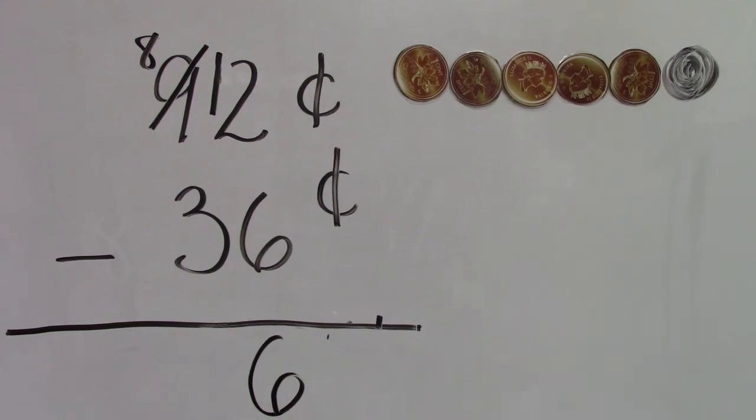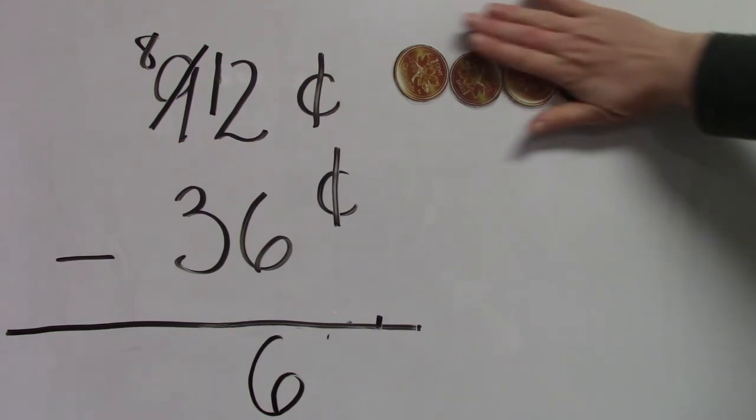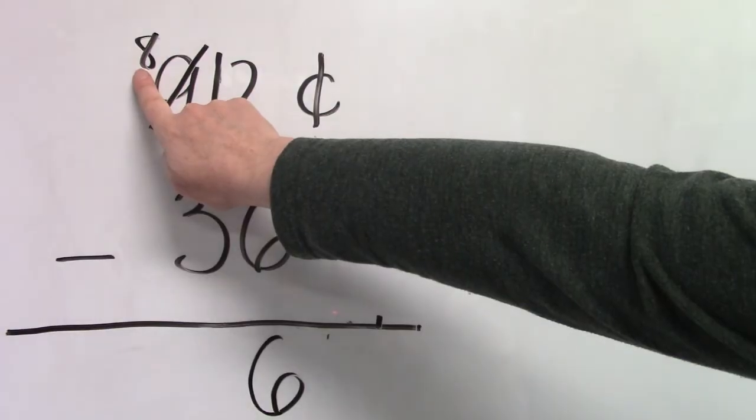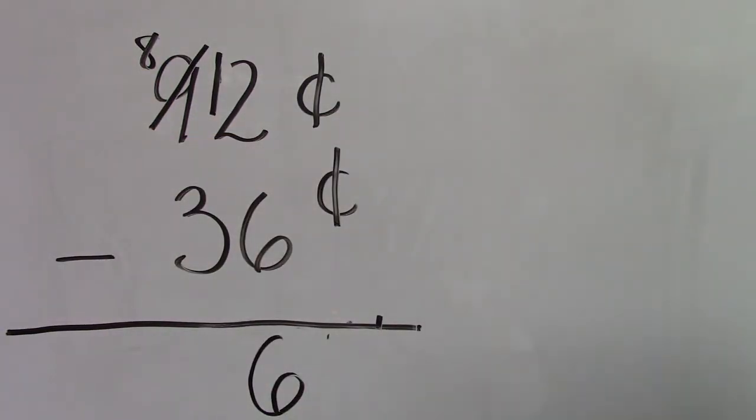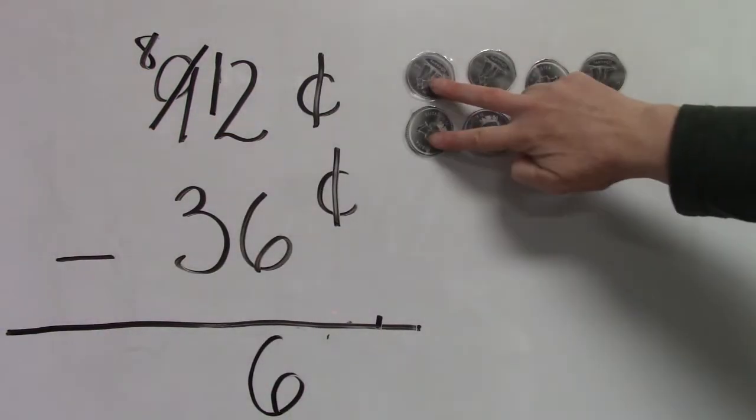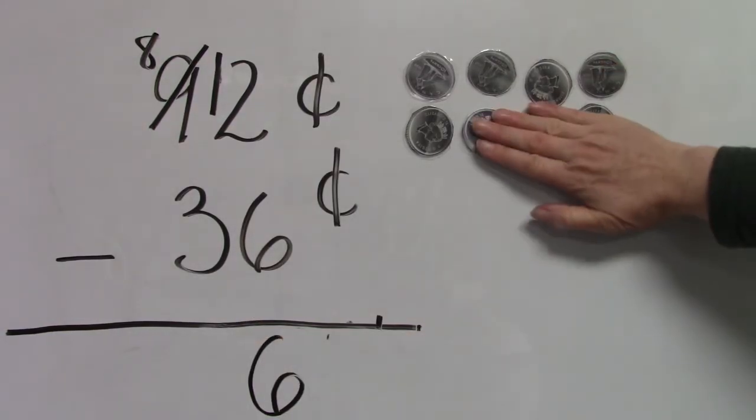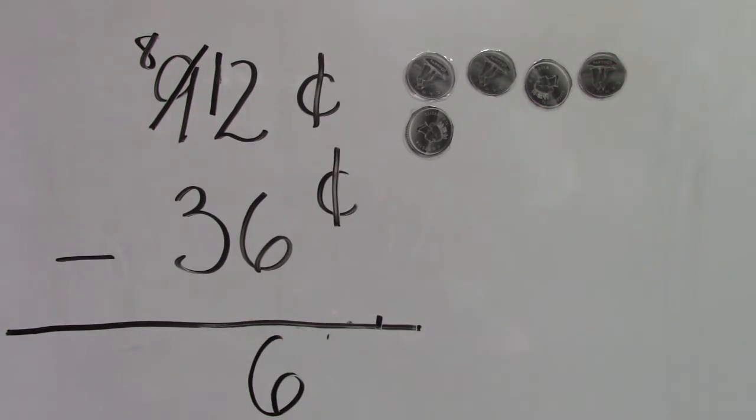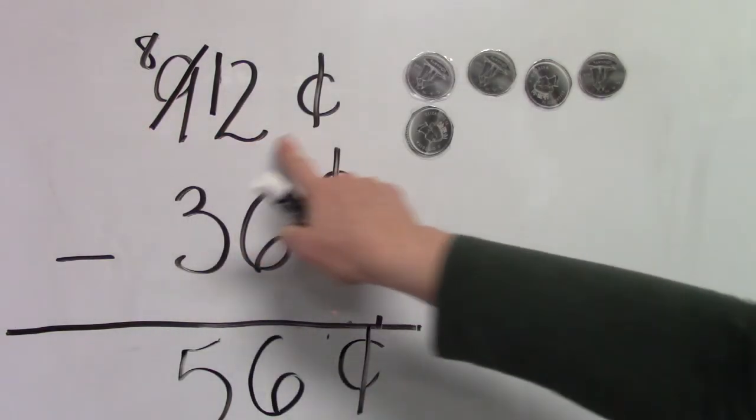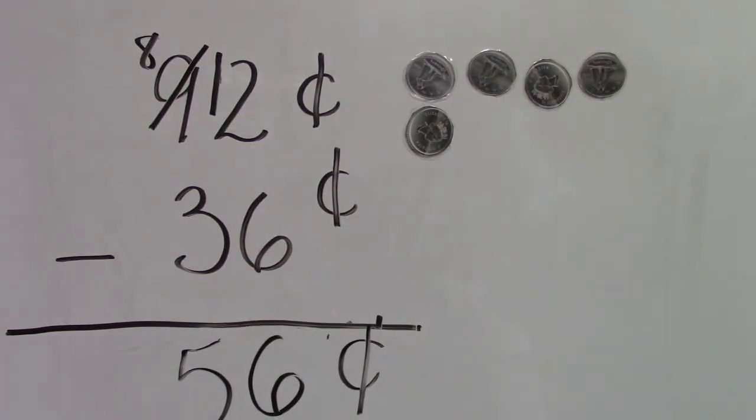Six. Well now we are going to subtract our dimes. In our tens place or our dimes place we have eight dimes. Two, four, six, eight. And we're going to take away three. How many dimes do we have left? You're right. It is five. 92 cents take away 36 cents is 56 cents.